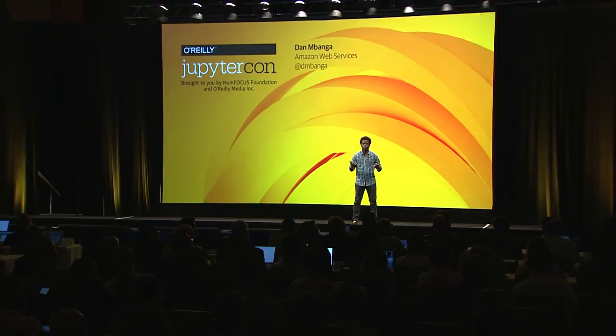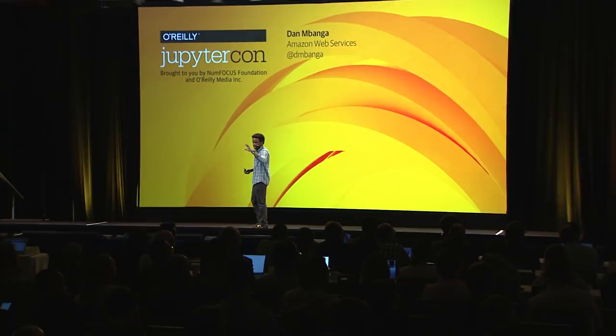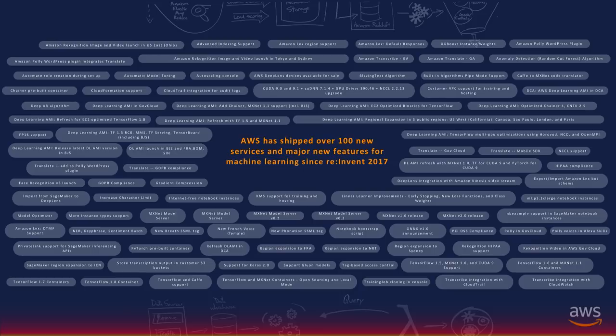We've been busy at AWS. Those layers seem simple, but for the past eight to nine months we've released up to 100 major features and services. In the back end, we're building all of these platforms, optimizing them, ensuring compliance, and adding new packaging for frameworks like TensorFlow, Horovod, and Chainer. We're making sure we're GDPR and HIPAA compliant — all the things that have to happen in the back end so that as you build intelligent applications using Jupyter Notebooks, you don't have to worry about any of that.